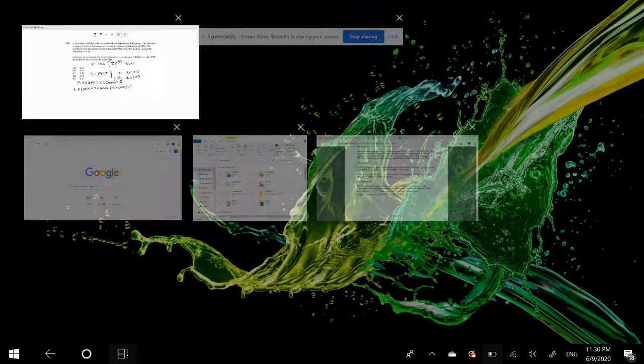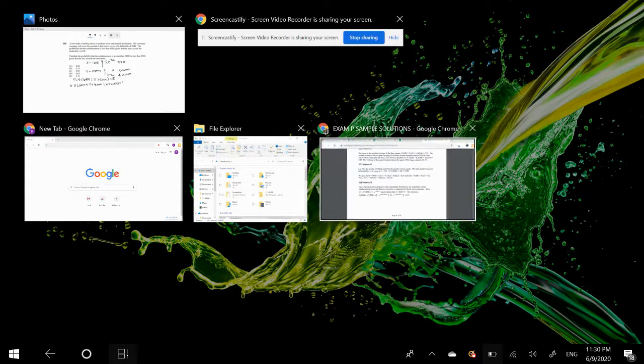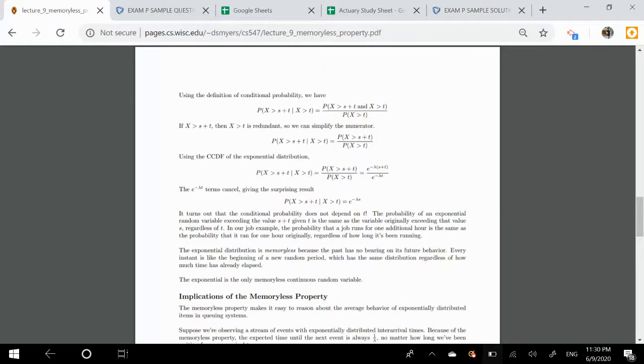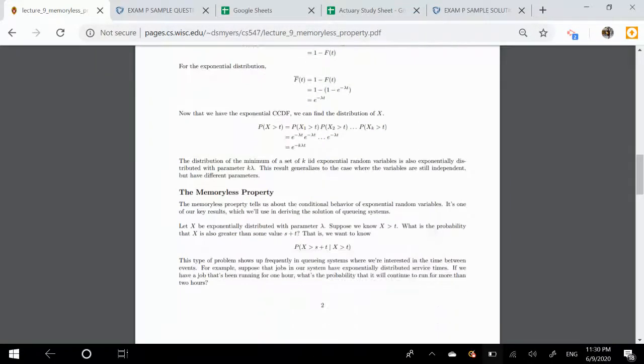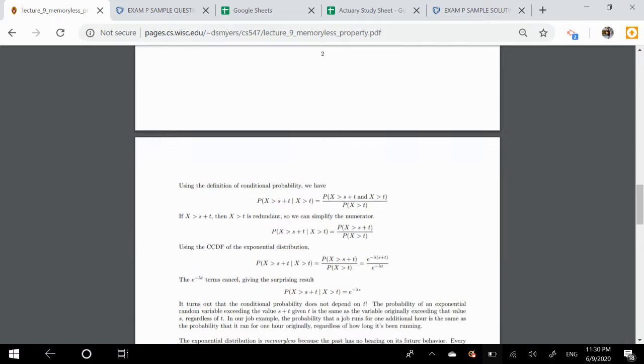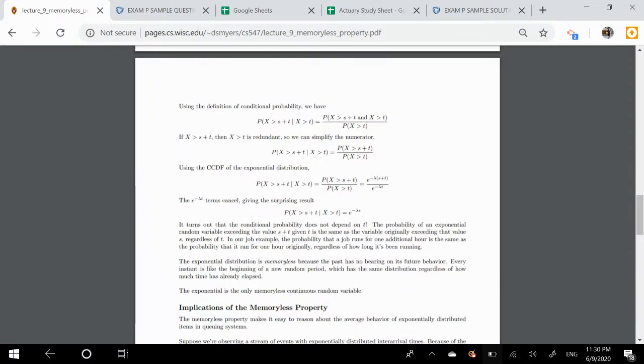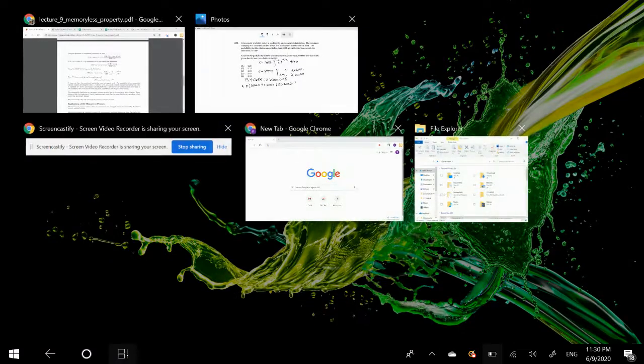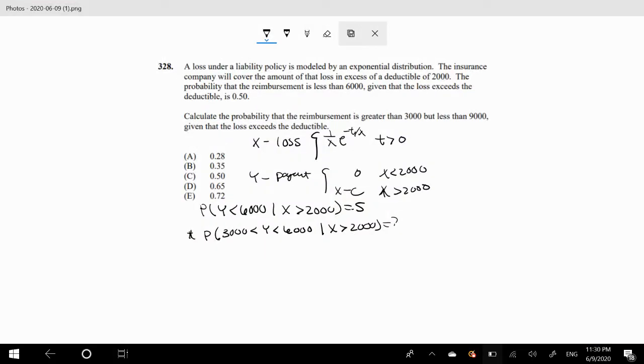What's tricky about this question is that you have to realize there is a memoryless property for the exponential function. I'm not going to go into the proof right now, but basically it's the idea that for an exponential distribution, what happens in the past has no bearing on its future behavior. Because of this property, it really doesn't matter about the condition that X is greater than $2,000, and it actually ends up being that the payout distribution is going to be the same as your loss distribution.